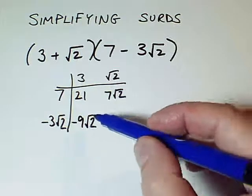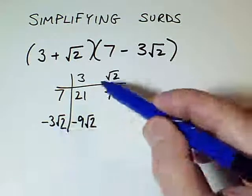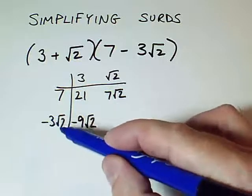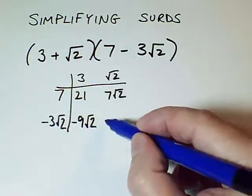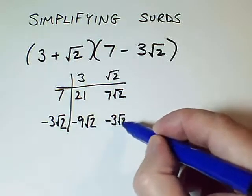Now this one here, we might prefer just to write down first of all an unsimplified expression. So I've got minus 3 times root 2 times root 2, so minus 3 root 2 times root 2.